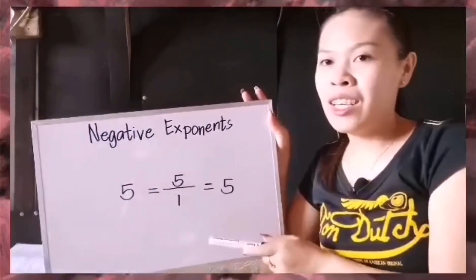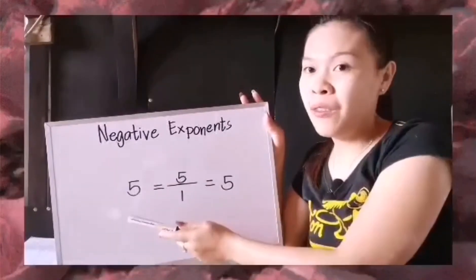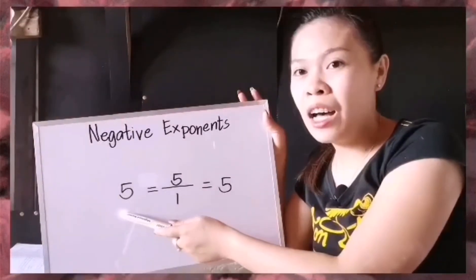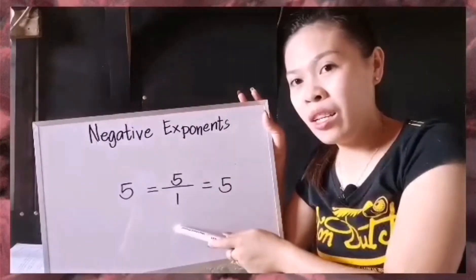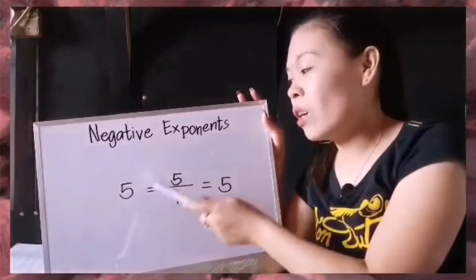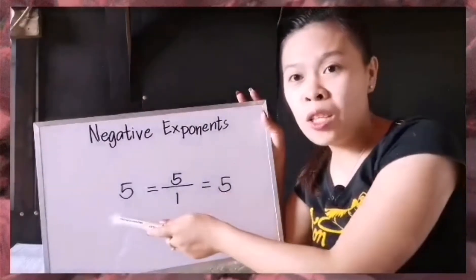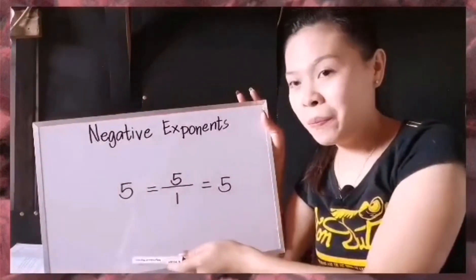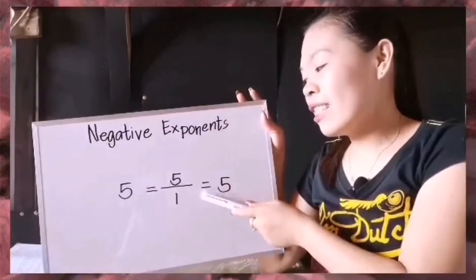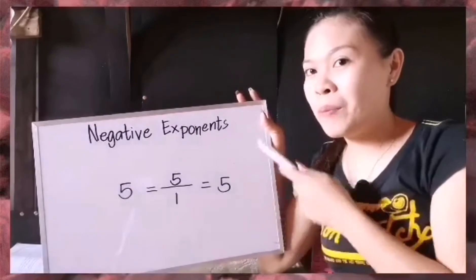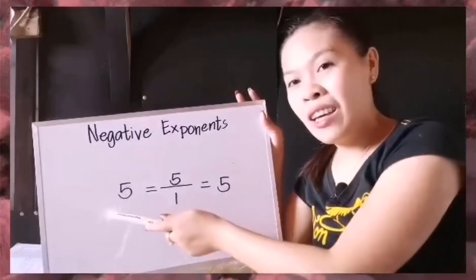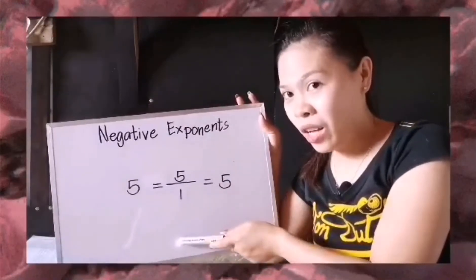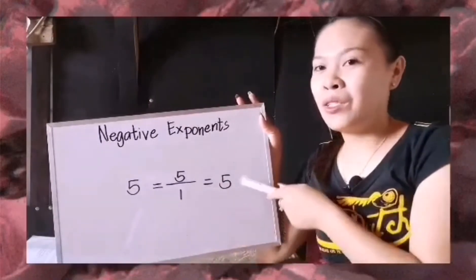Before we apply the rule of negative exponents, let's have first these numbers. The first number is 5. If a number is 5, this is a whole number. If this 5 has its denominator, which is 1 — so 5 is just equal to 5 over 1. Meaning to say, a whole number always has its denominator which is 1, or an imaginary 1.